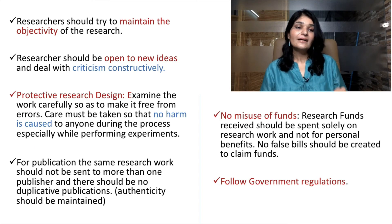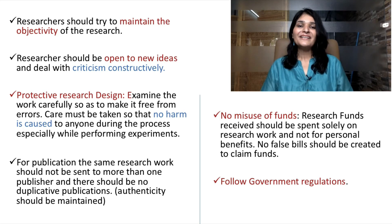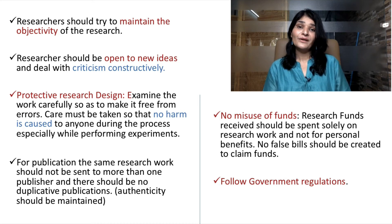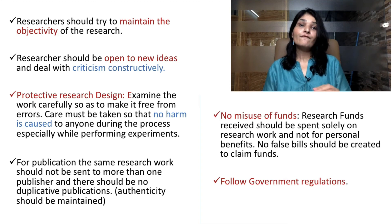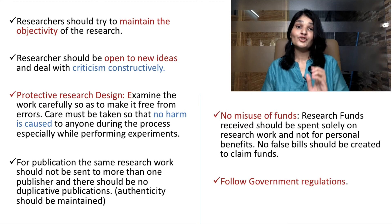No misuse of funds. Research funds received should be spent solely on research work and not for personal benefits. No false bills should be created to claim funds. Many of you will clear UGC Net and also JRF, at which point you get a research stipend from the government monthly. Those who receive research projects also get government funding. An important ethical point is that these funds should be used only for research work, not personal use, and you should not make false bills to avail financial grants.